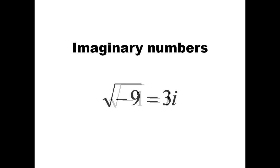We can take the square root of other negative numbers in the same way. So the square root of negative nine is three i.